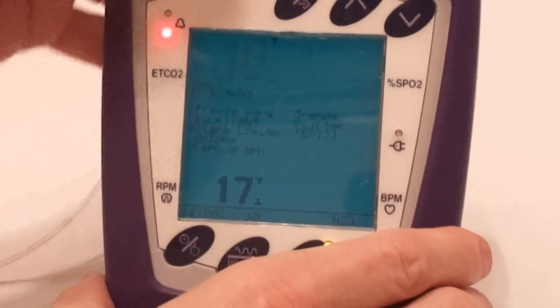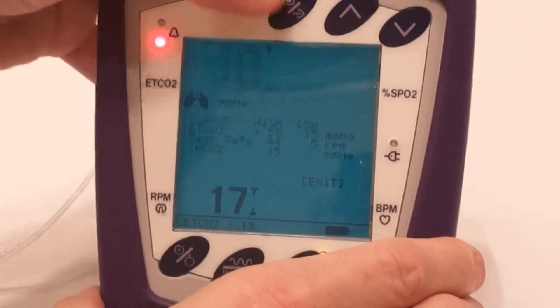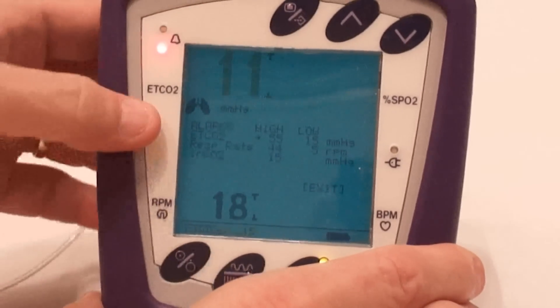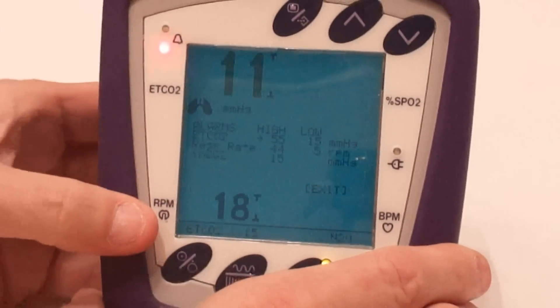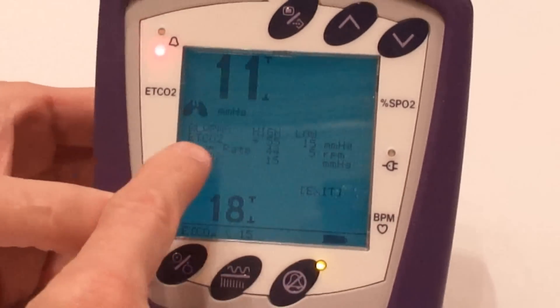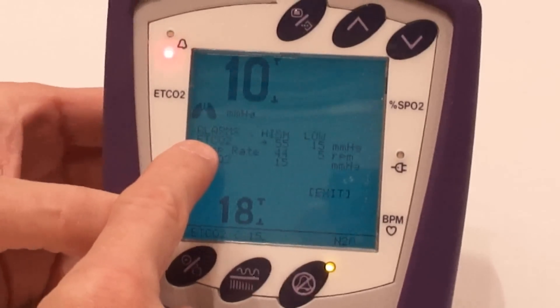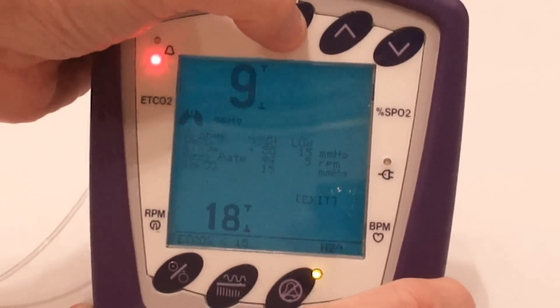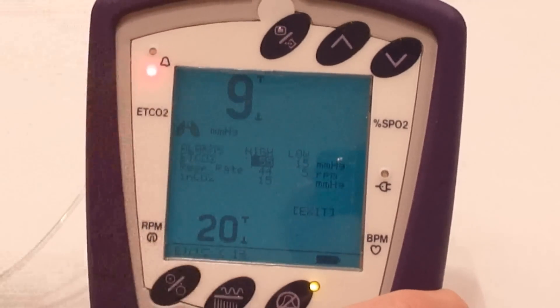For instance, we'll look at the alarm limits. Press the menu button again and here comes up your alarm limits. So what we do is right now we have the alarm set on end-tidal CO2. High is at 55. If we wanted to change that, we would just press the menu button and it highlights it.